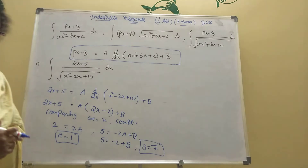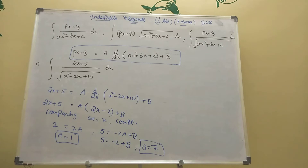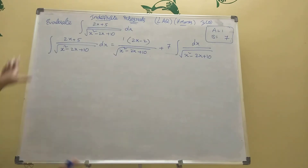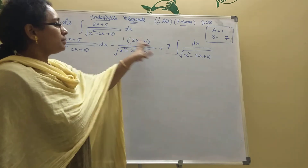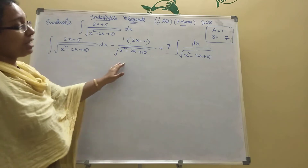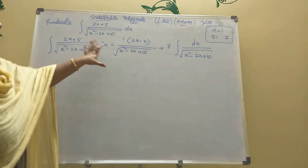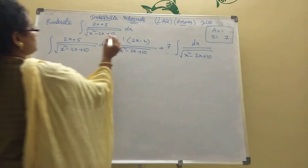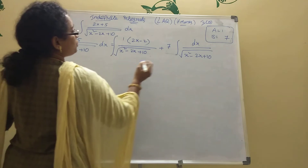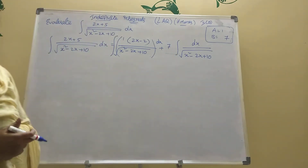You got b also. a value is 1, b value is 7. Then update them and you will get the value easily. a value we got 1, b value 7. That's why: a into d/dx of denominator plus root of denominator, plus 7 into denominator to the power minus 1 by denominator. We applied a and b values. Now integration - write integration of this total into dx.